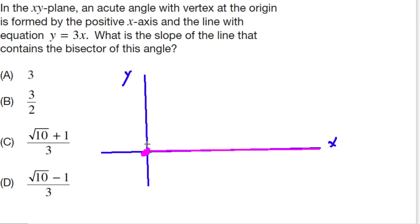And the line with the equation Y equals 3X. It's just a line that's going up, the slope of up 3 over 1. There it is.